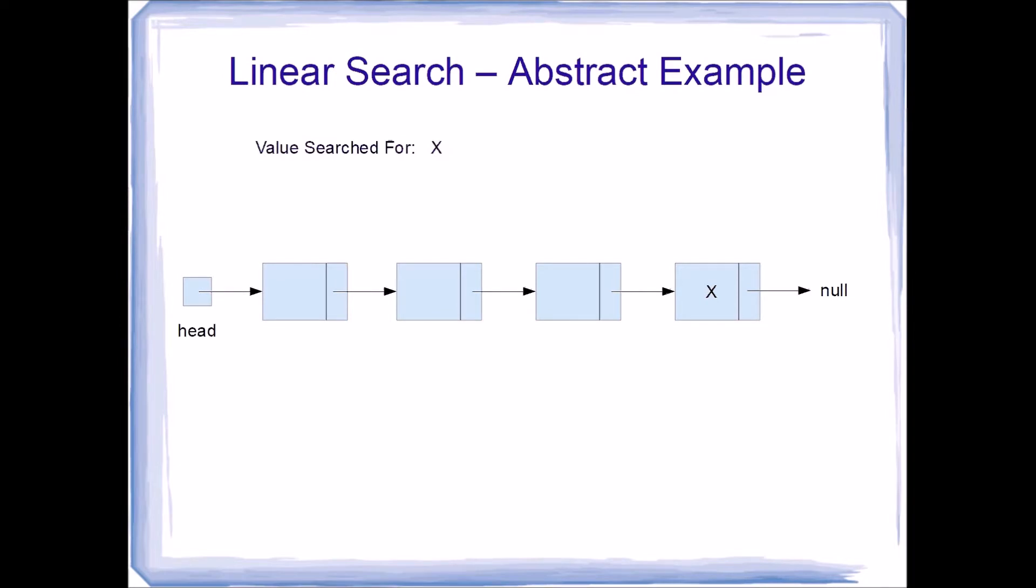To do this, we need to perform a traversal using a temporary pointer. We'll call this pointer 'cur'. Cur begins initialized to the head node. So long as cur is not null and the node pointed to by cur does not contain the value searched for, we advance cur.